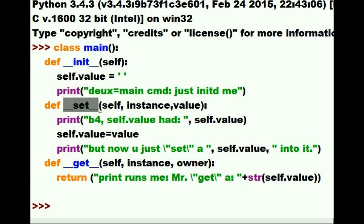The next one is double underscore set. We're only interested in this parameter, value. It will print before self.value, this guy here, had. I'm going to print out the data contained in self.value.